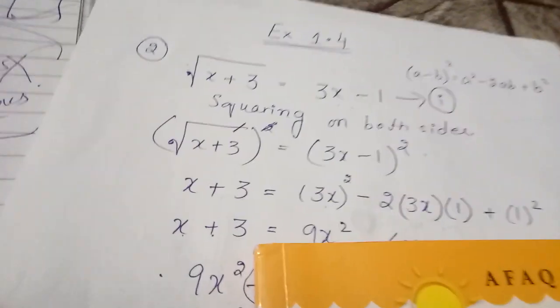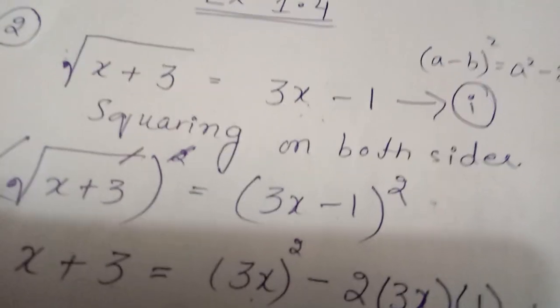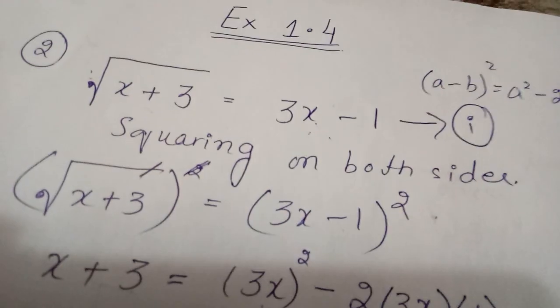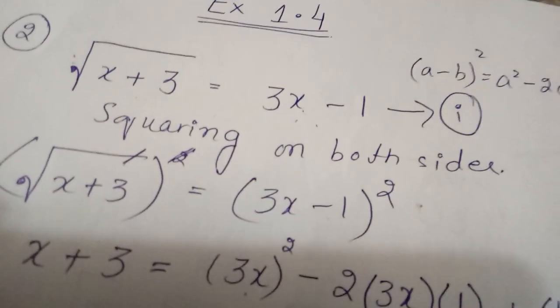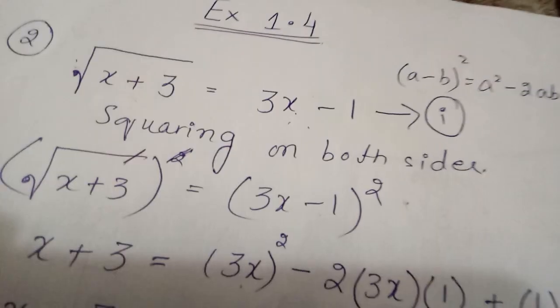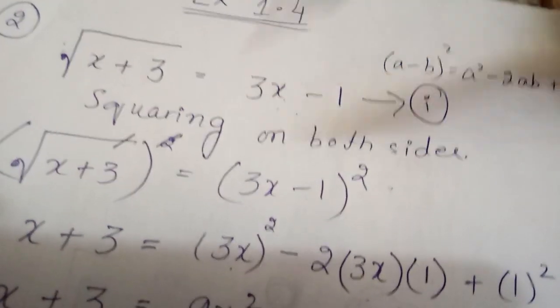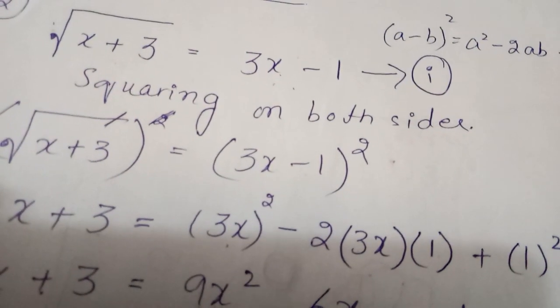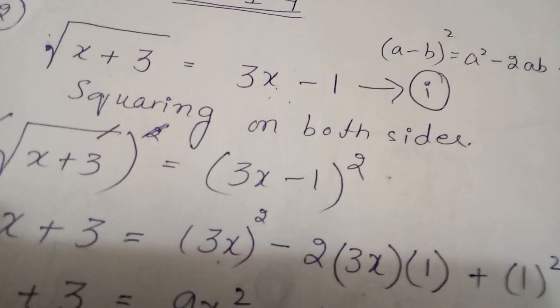Let's talk about question number two. Questions one through four are of Type 1 radical equations. In Type 1, one side has a radical sign and the other side is simple — that is what defines a Type 1 radical equation, and there is one specific method to solve it.